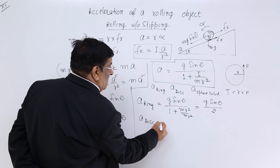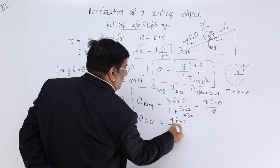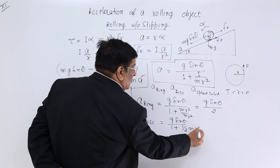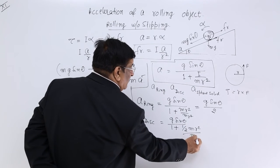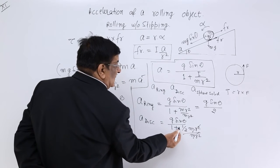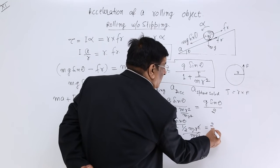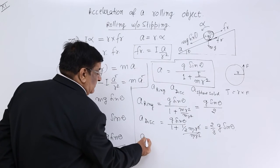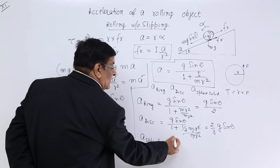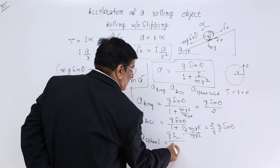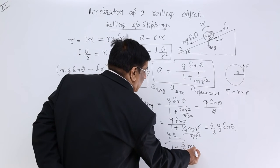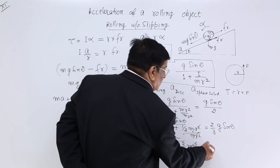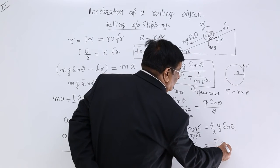For the disc, acceleration equals g sin theta divided by (1 plus half MR squared upon MR squared), which is g sin theta divided by 3/2, giving 2/3 g sin theta. For the solid sphere, acceleration equals g sin theta divided by (1 plus 2/5 MR squared upon MR squared), which is g sin theta divided by 7/5, giving 5/7 g sin theta.